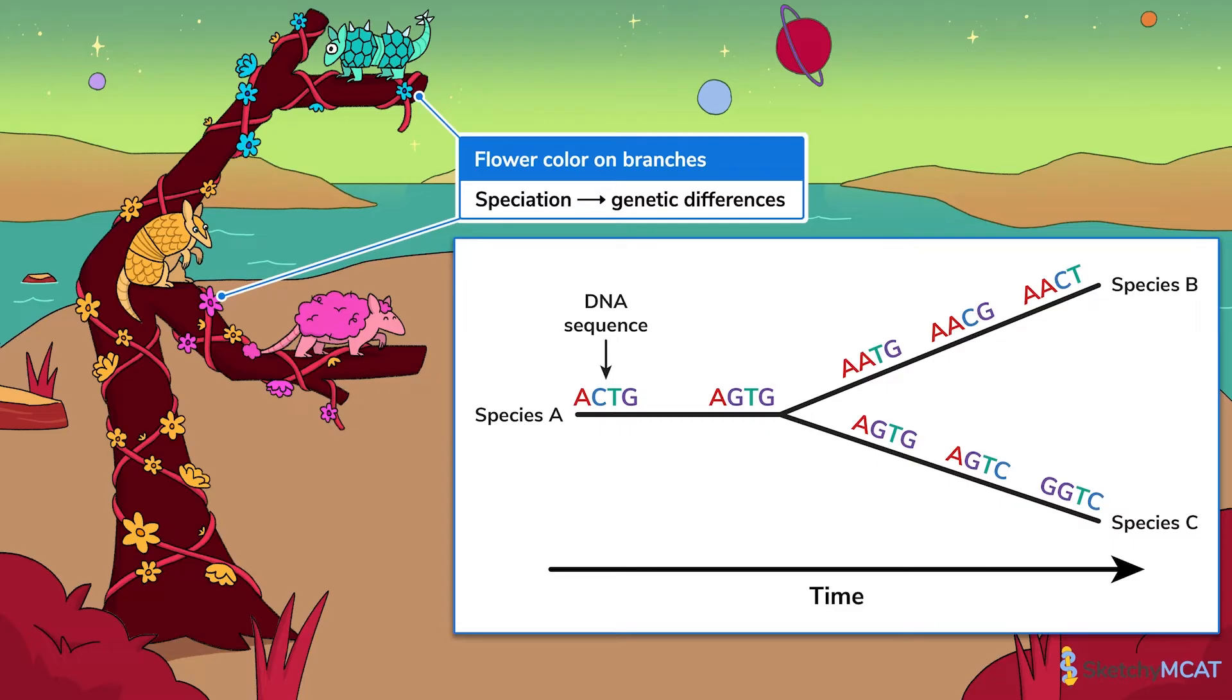Usually, the accumulation of genetic differences between species over many generations also causes phenotypic changes. Those changes provide clues as to what selection pressures each lineage faced and how those pressures shaped each lineage's evolution.